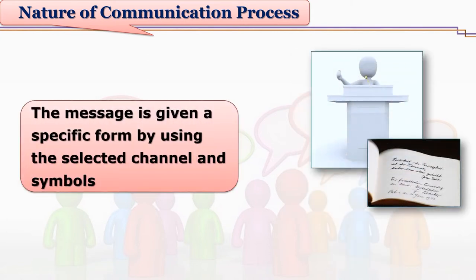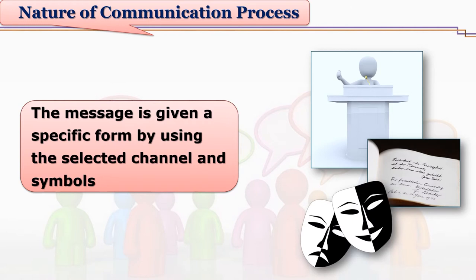Once the message is conveyed through a particular symbolic system, the message passes through some channel. For this, using those symbols, some new form needs to be given to the message by the sender. The sender prepares and develops this message, and a particular form is generated. This form can be a speech, a combination of visuals and the sender's speech, a poem, a drama, or a picture.